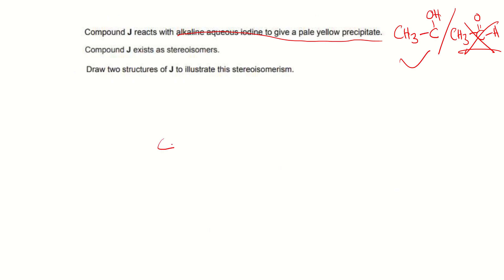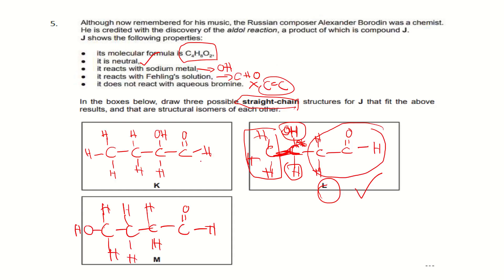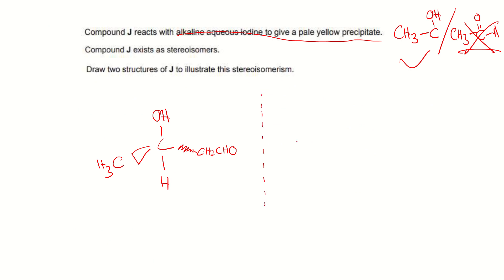Drawing the two optical isomers (stereoisomers) of J in 3D: the chiral center has OH, CH3, H, and CH2CHO. Using wedge-and-dash notation, draw the first isomer, then draw its mirror image — these are the enantiomers. That's it for Tutorial 8. Please remember to log into your tutorial session next week, and the next video will be Tutorial 9.